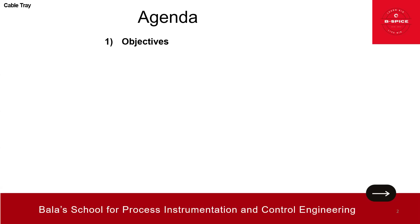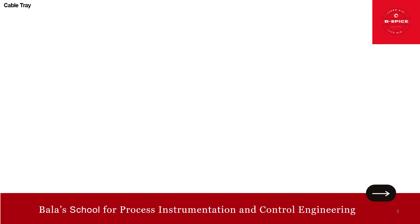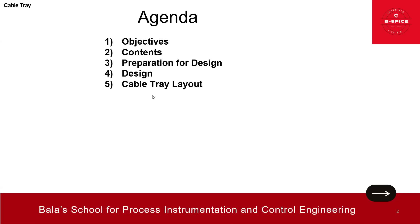The agenda for this session: we'll talk about the objective - why we need this cable tray layout drawing. Then the contents and look and feel. Then the preparatory activities we need to do for the design. Then the actual design work. Finally, we'll wind up with a typical project example covering all the cable tray aspects. Very simple and easy to understand.